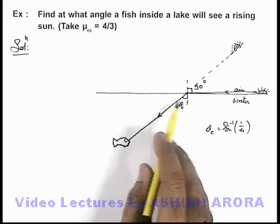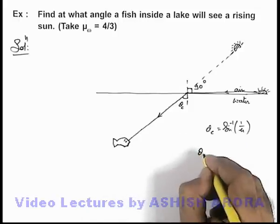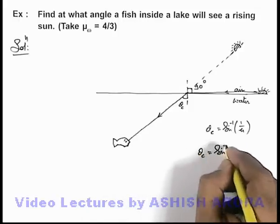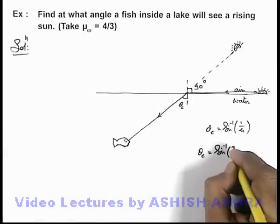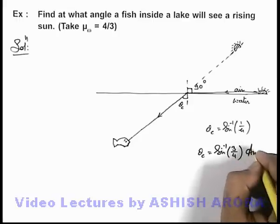With respect to the normal, the angle theta c here we can write as sine inverse of 1 by mu, and mu is 4 by 3 so it'll be sine inverse of 3 by 4. That'll be the answer to this problem.